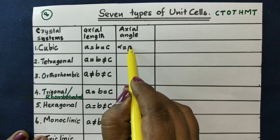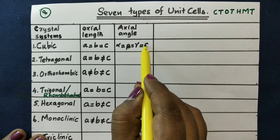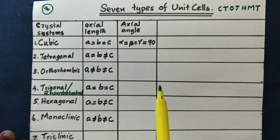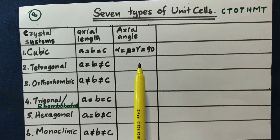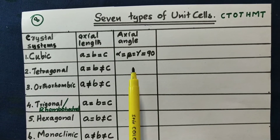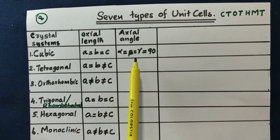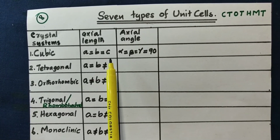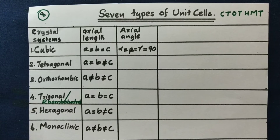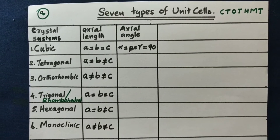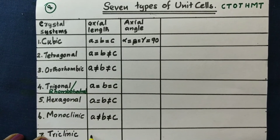Alpha equal to beta equal to gamma equal to 90 degrees. The cubic system is the most symmetrical system. If you look at the same angle, the most symmetrical system is the cubic system. The opposite is the most unsymmetrical system.